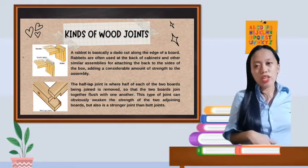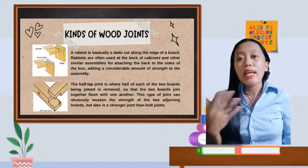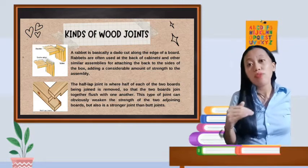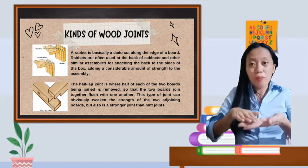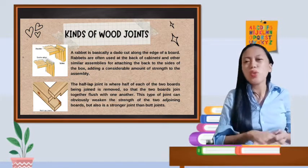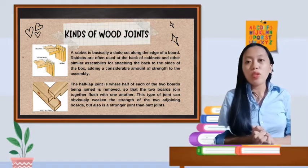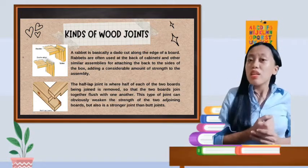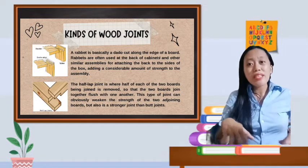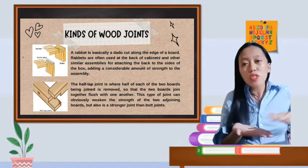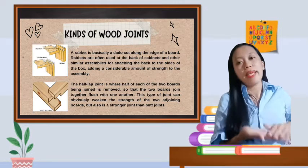Let's proceed to the half-lap joint. The half-lap joint is where half of each of the two boards being joined is removed, so that the two boards join together flush with one another. This type of joint can obviously weaken the strength of the two adjoining boards but also is a stronger joint than the butt joints. If you notice, the overlap is wider. The overlapping of the two woods is wider, so it's stronger than the rabbet.